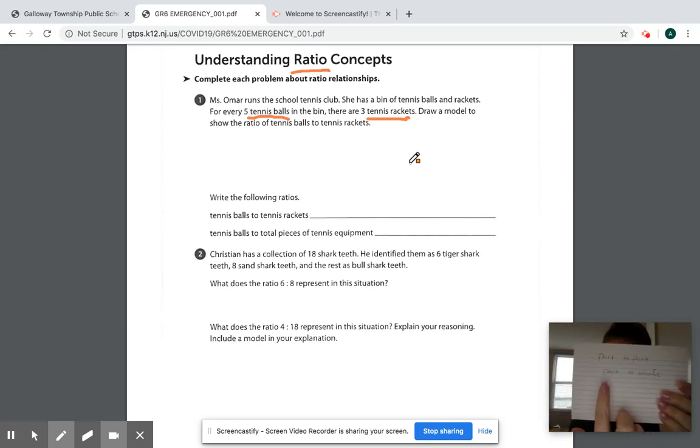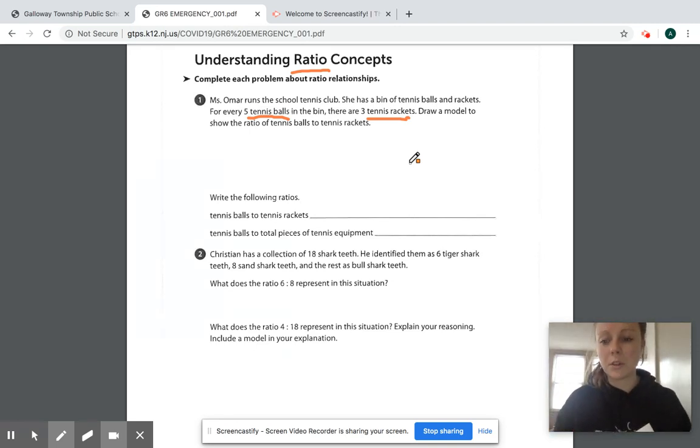Now a part-to-whole ratio is similar to a fraction. With fractions, we're comparing some kind of part to a whole, like a whole circle or a whole pizza.